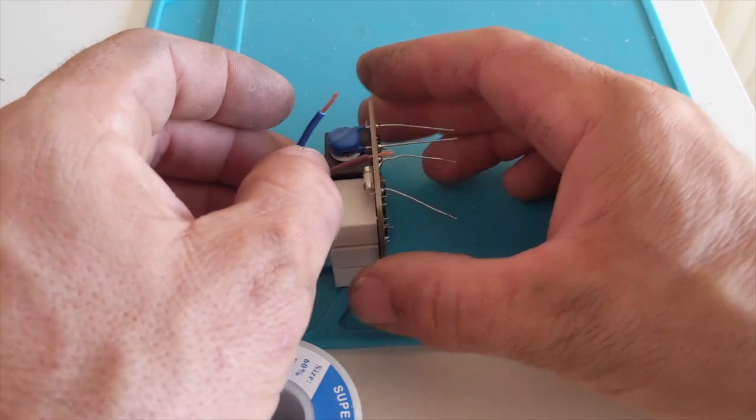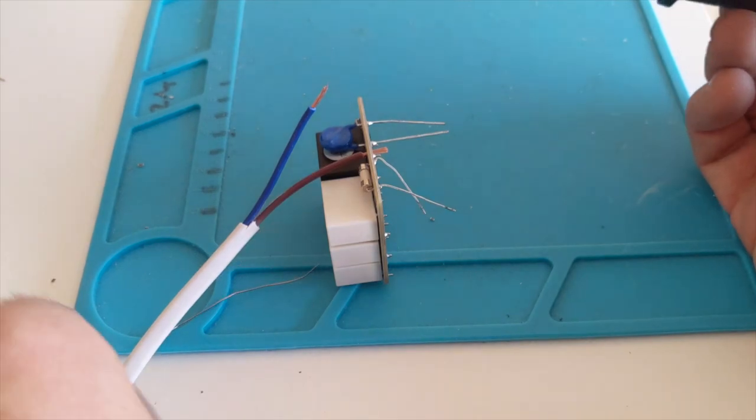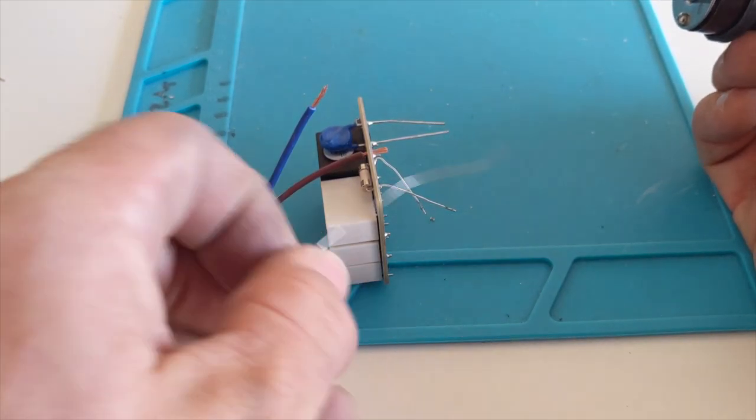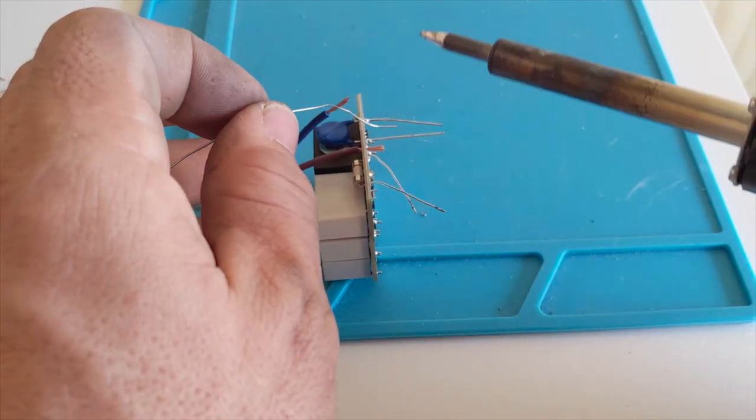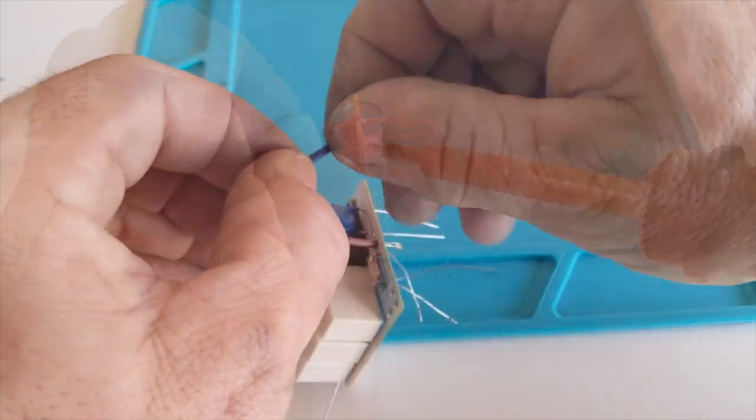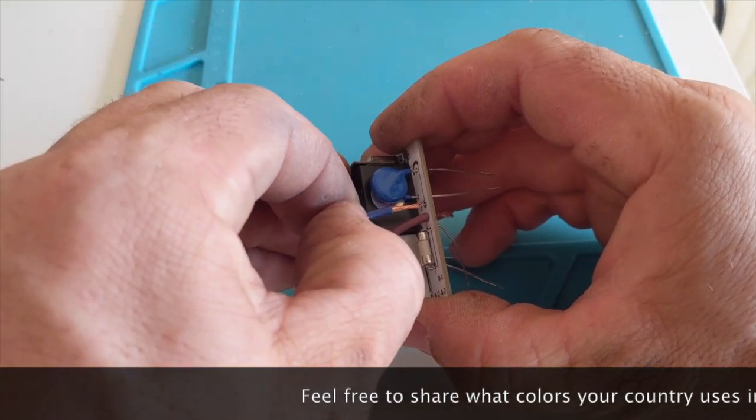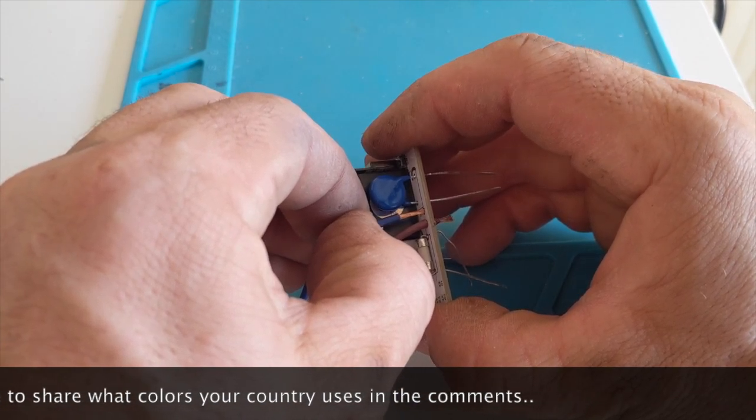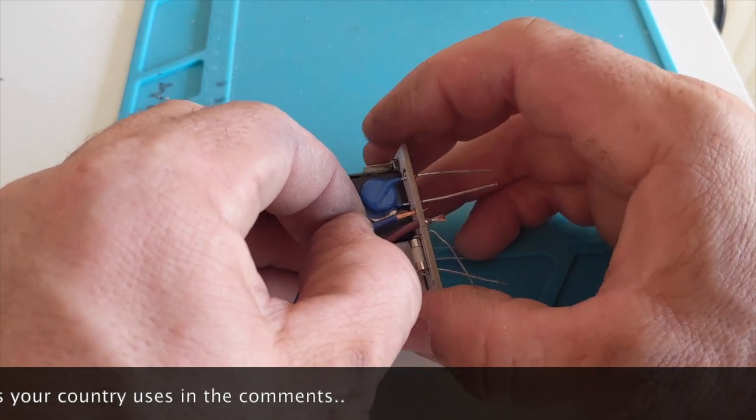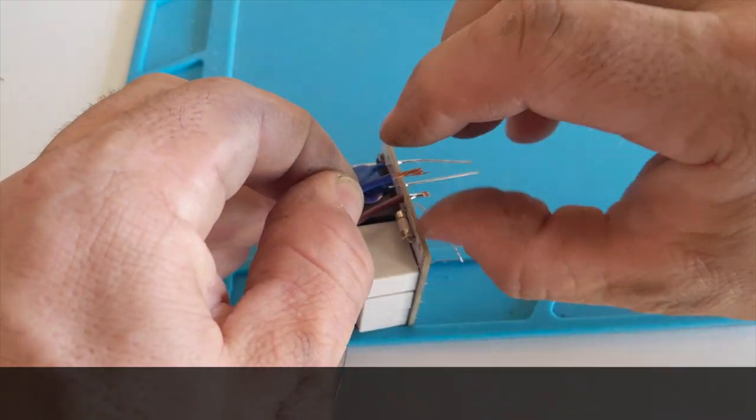So now we've just got to put these leads in. So this is our 240V input lead. And it is a 0.75mm wire stranded copper. And of course the color coding in Australia, the line or active is brown and the neutral wire is blue.